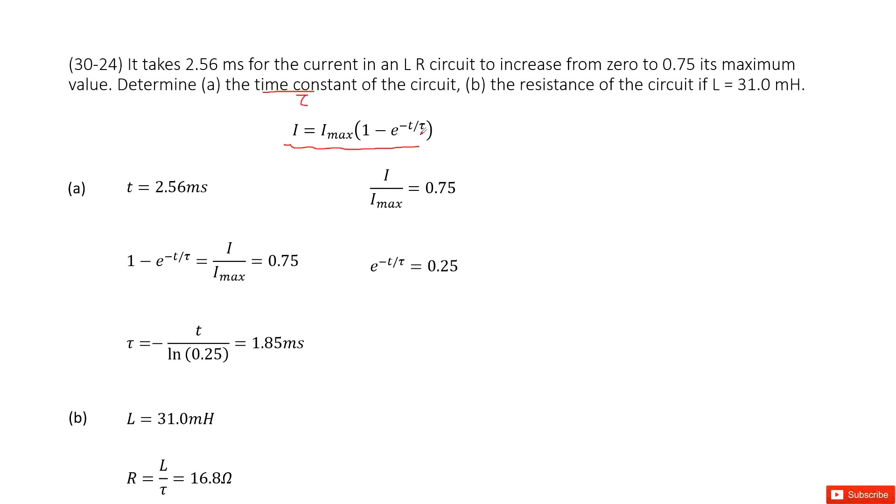We convert this equation. We know I over I_max equals 1 minus e^(-t/tau), which equals 0.75.